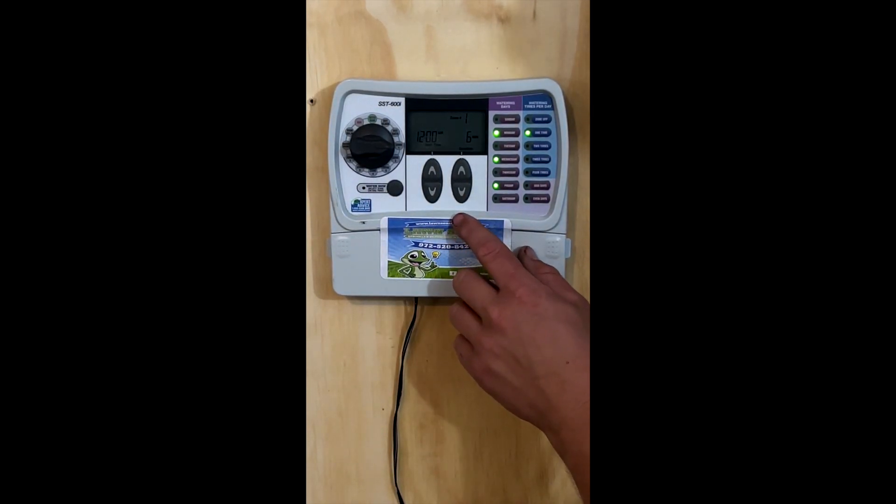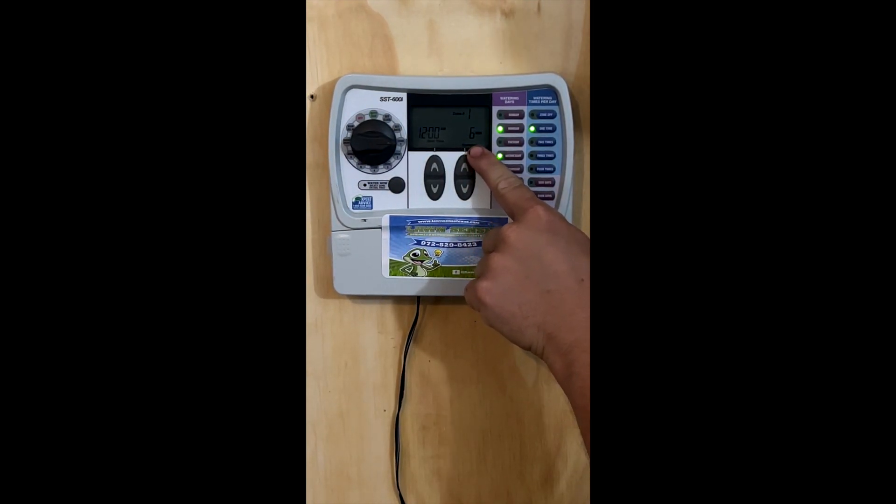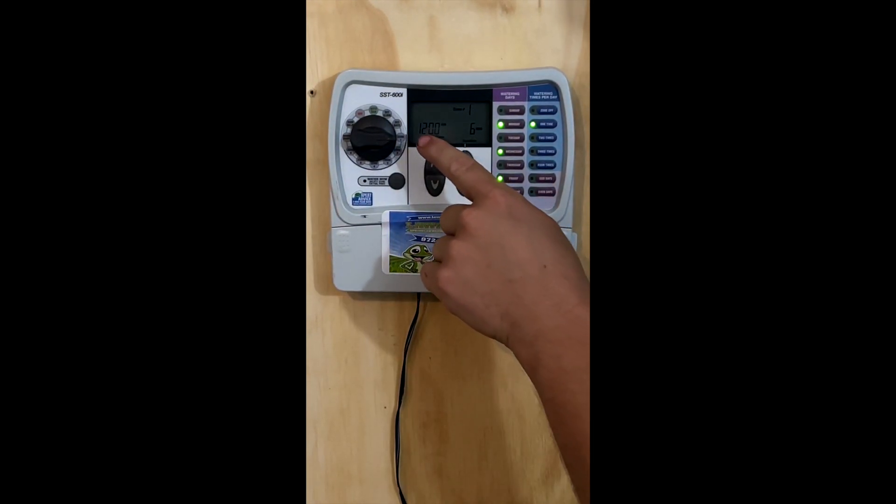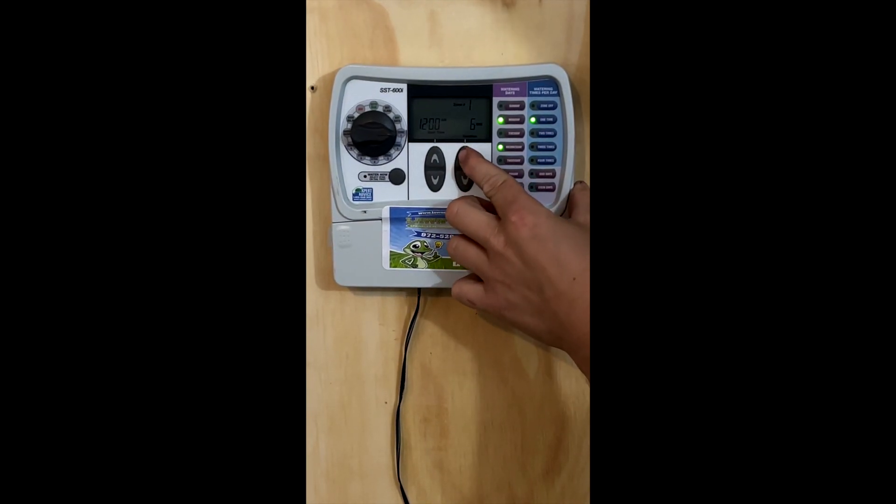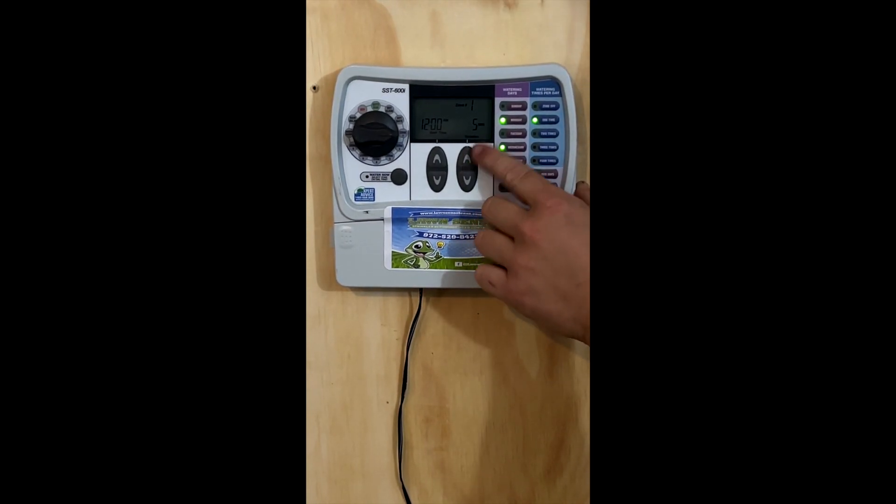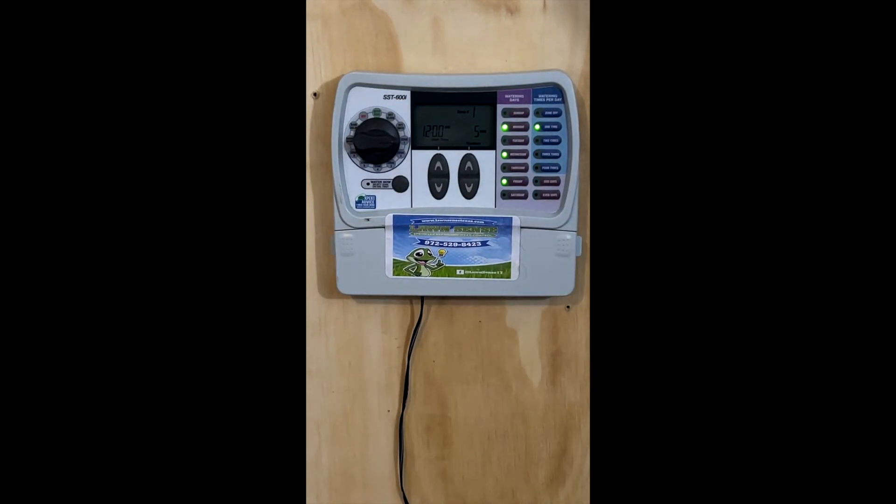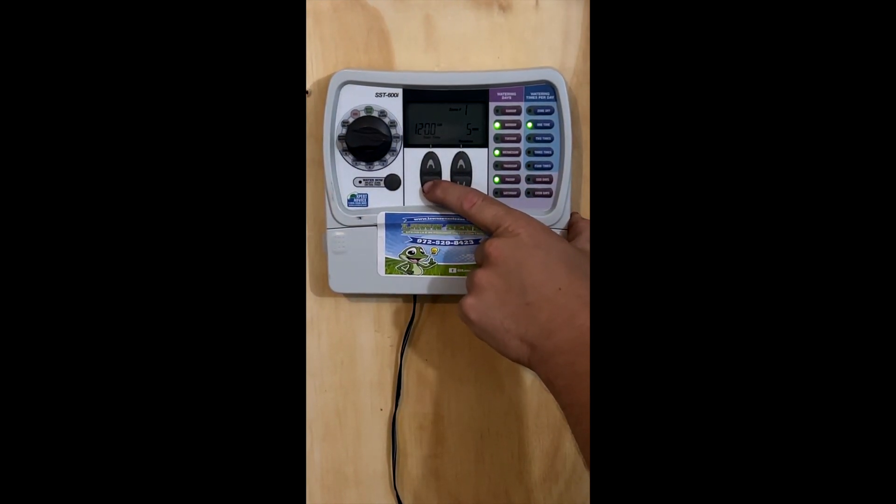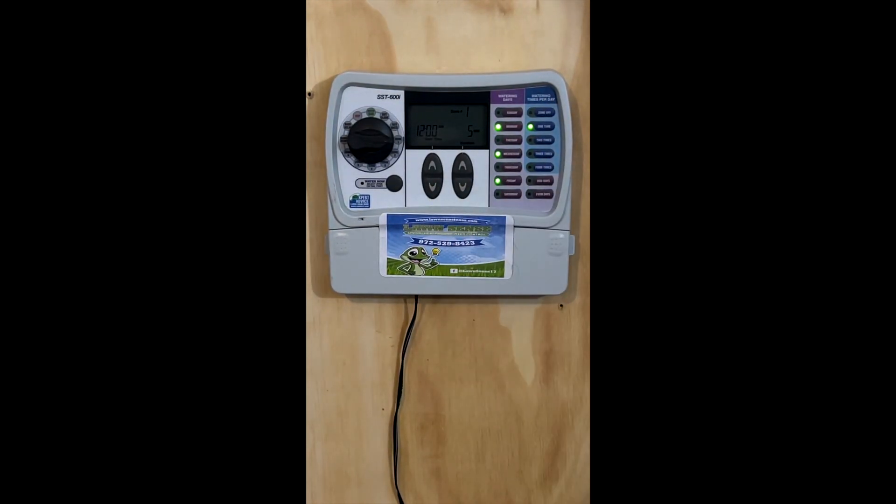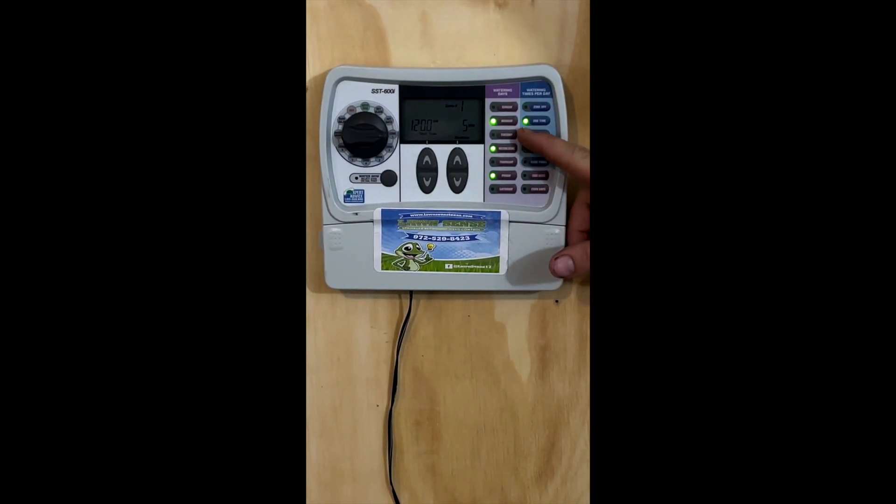So the first thing we're going to do here is we're programming zone one. Zone one has a scheduled runtime of six minutes, and it's going to start at 12 a.m. These two arrows will move the runtime up and down. This arrow right here will adjust when it starts. We're going to leave this one at 12 a.m. But once we have these values set, the next thing we're going to do is come over here.